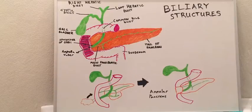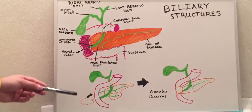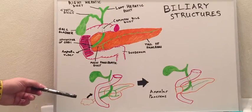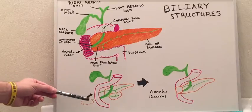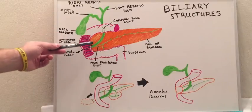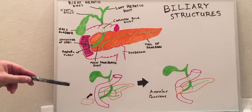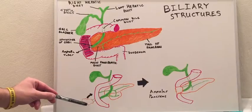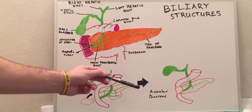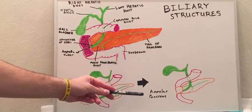An interesting feature of the duodenum — if you look at these two diagrams down below — in normal embryological development, the ventral bud typically makes a 180-degree turn around the duodenum. However, in an embryological malformation, the ventral bud will not make this turn and instead will wrap around the duodenum, causing a structural obstruction. This is called the annular pancreas.